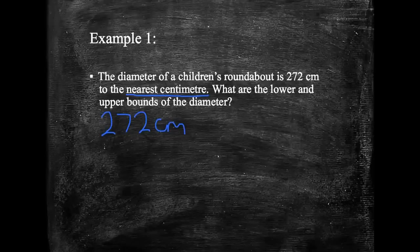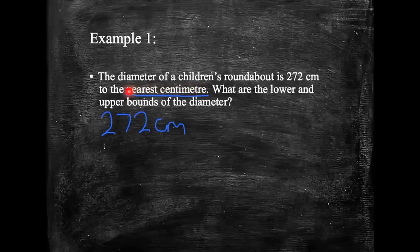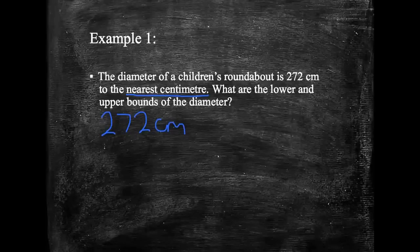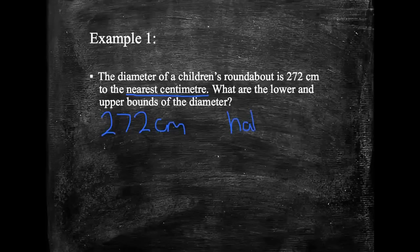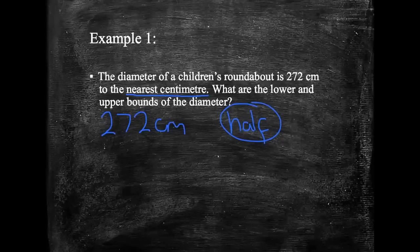This part, the nearest cm part, this is the most important part of this question. So it's 272 cm to the nearest cm. What we do with any upper and lower bounds question is we see what it's been rounded to, in this case to the nearest cm, and we decide we're going to half that. So whatever it's been rounded to, we're going to half it. In this case, half of a cm is 0.5 cm.